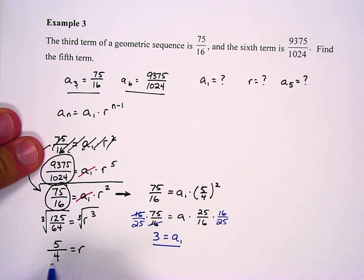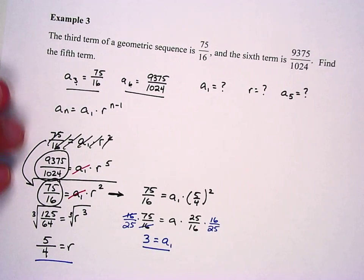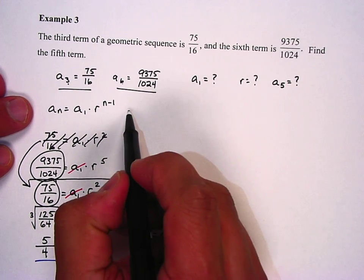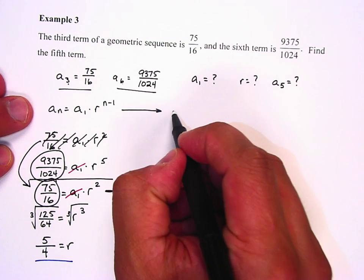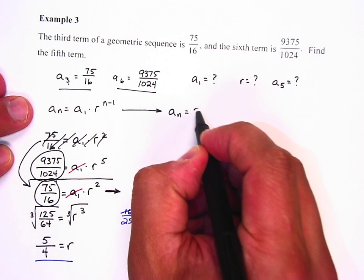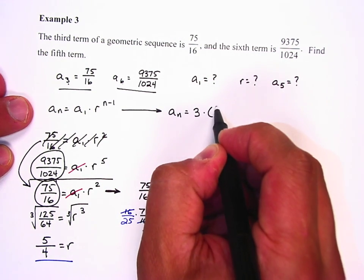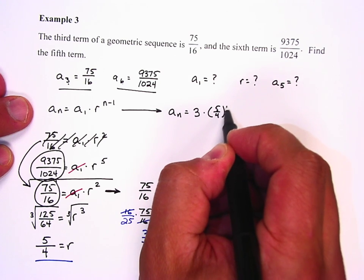Now that's good because I have the r and I have the a sub 1, and so what I can do is I can take it and plug it into our formula and say a sub n equals 3 times 5 fourths to the n minus 1.